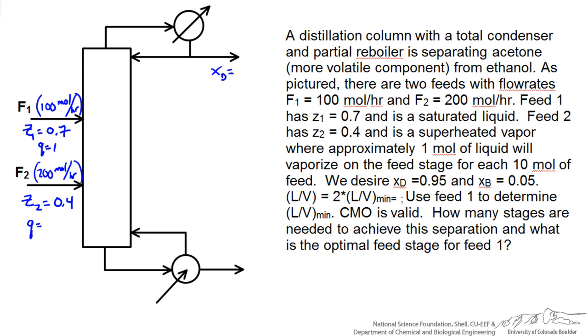We know our outgoing specifications and we are told that our reflux here we are going to be operating at 2 times L over V min. It is always good to make sure we write down what we are looking for so that we can refer back to it. We want the number of stages and the feed location for 1.